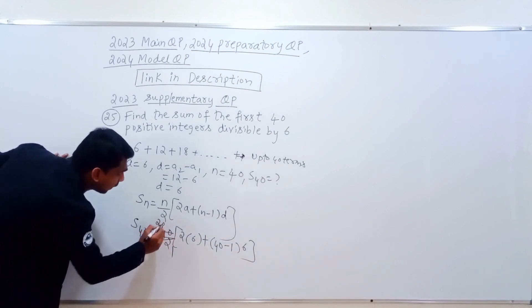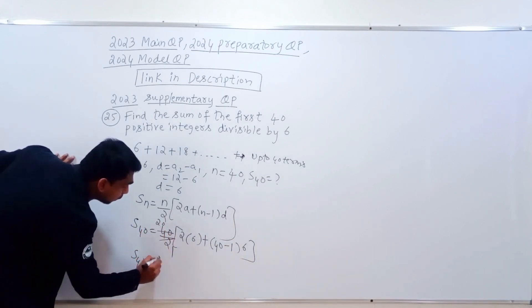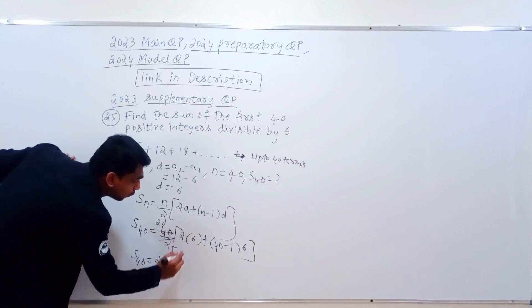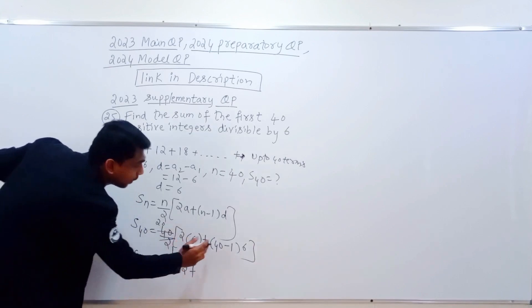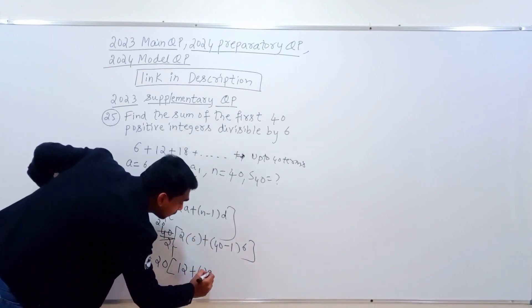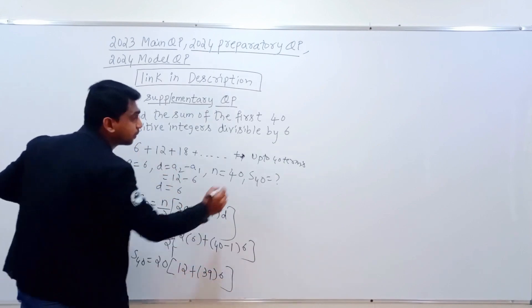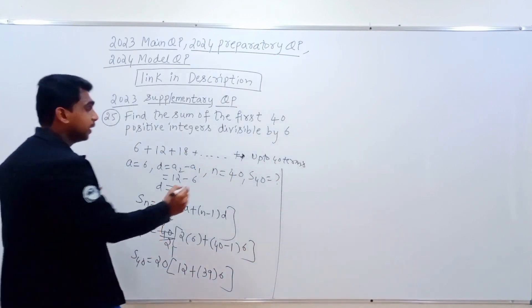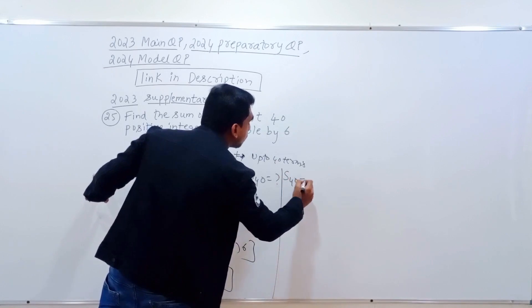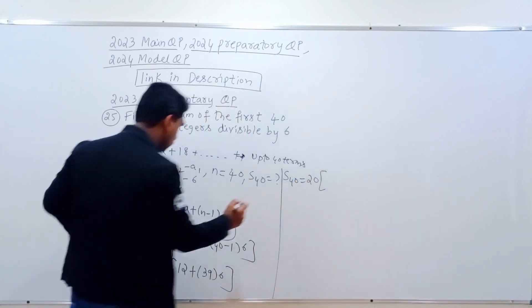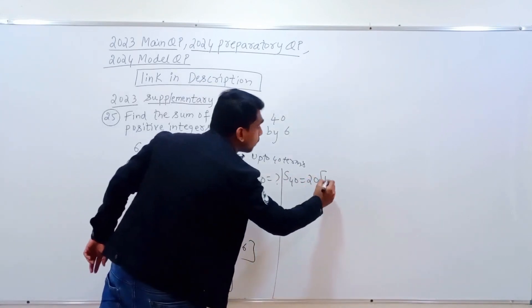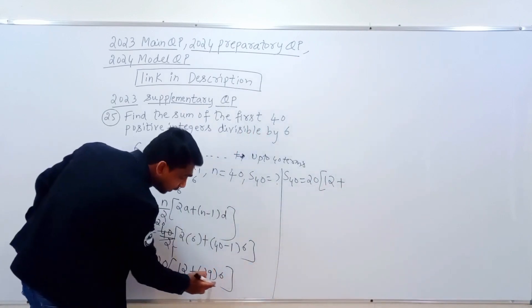S40 is equal to 20 into 2 times 6 is 12, plus 39 into 6. This is equal to 20 into 12 plus 234.